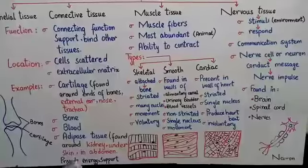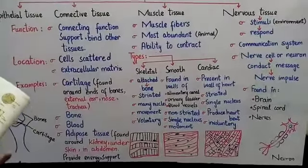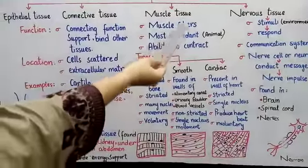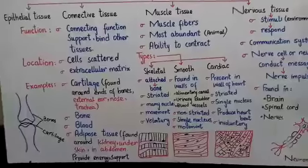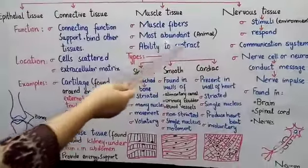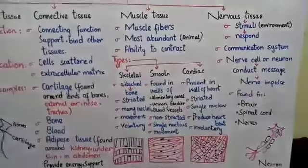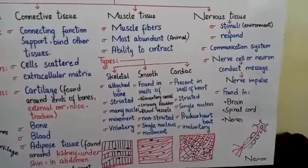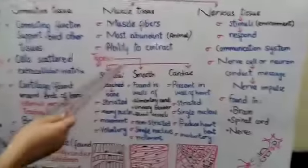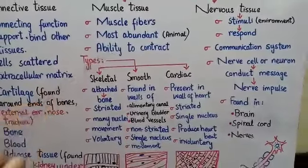In muscle tissue, it consists of long cells — bundles of long cells — which are called muscle fibers. It is the most abundant type of tissue in animals. The cells of this tissue have the ability to contract — they can contract and relax.